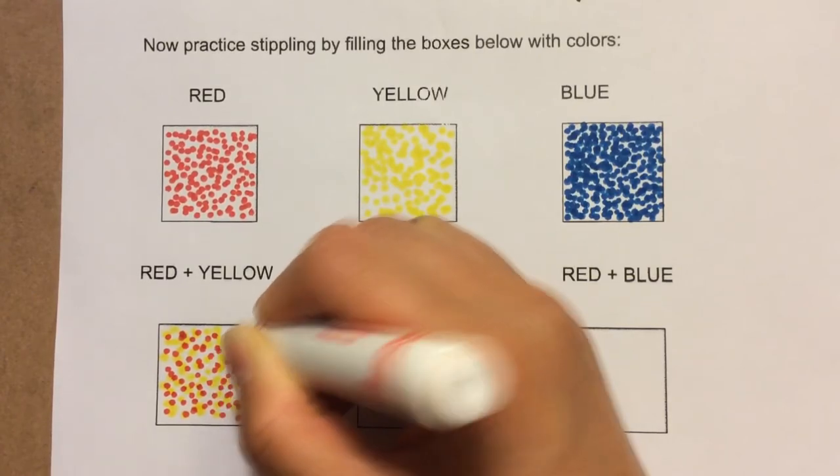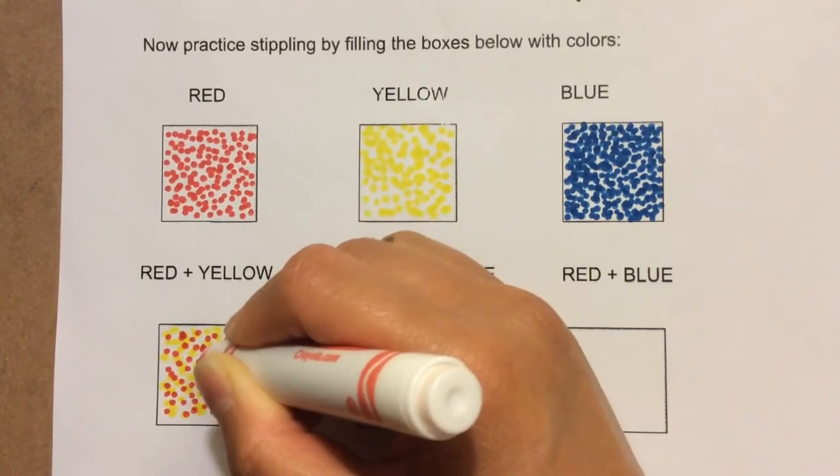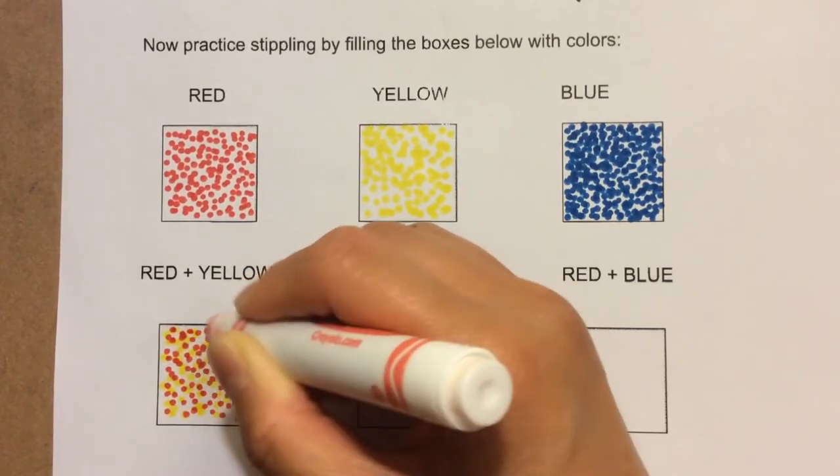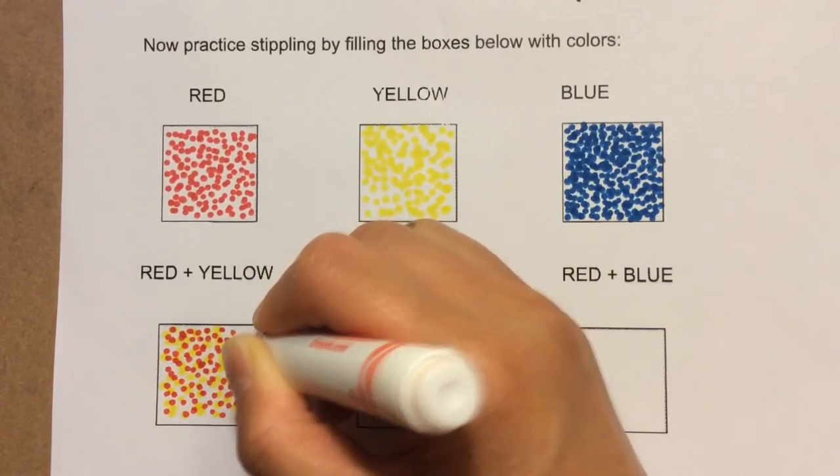Just make an effort to evenly space them as much as possible so that one area doesn't look darker than another. Unless you intend it to, like when we were shading the cylinder.